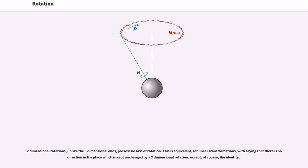Two-dimensional rotations, unlike the three-dimensional ones, possess no axis of rotation. This is equivalent, for linear transformations, with saying that there is no direction in the plane which is kept unchanged by a two-dimensional rotation, except, of course, the identity.